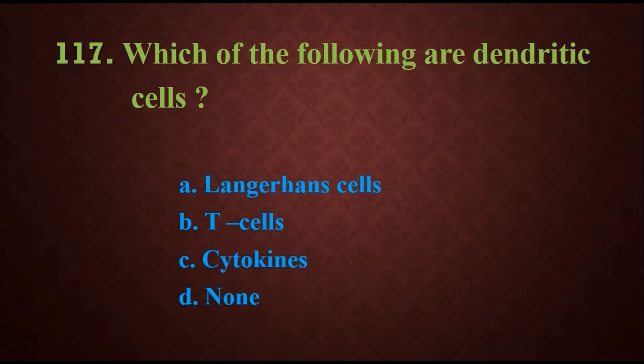Question 117: Which of the following are dendritic cells? Options are Langerhans cells, T cells, cytokines, or none. The answer is Langerhans cells.